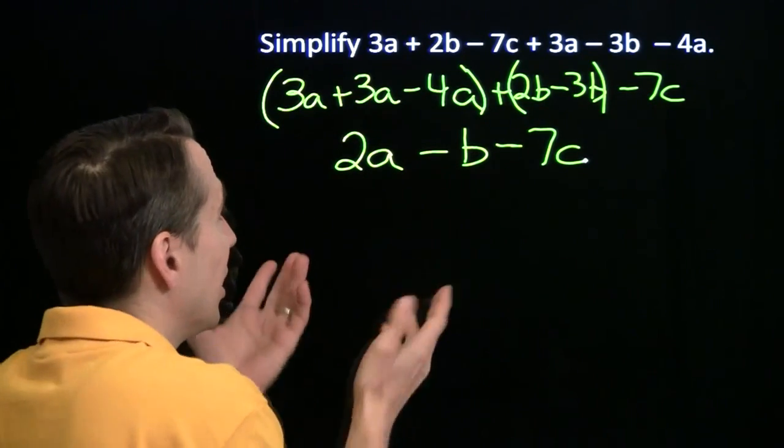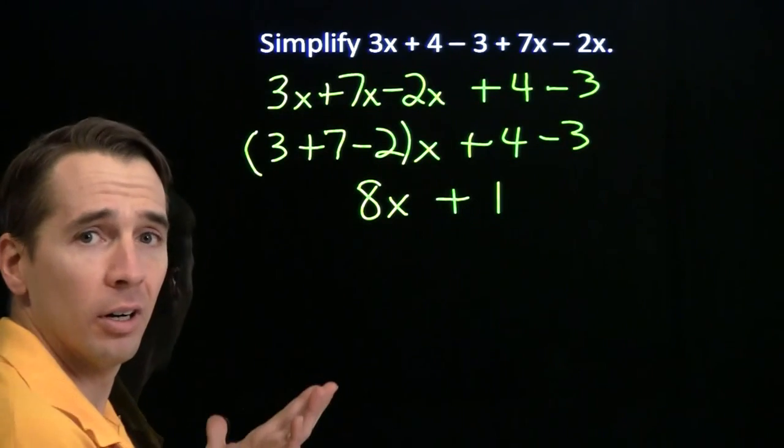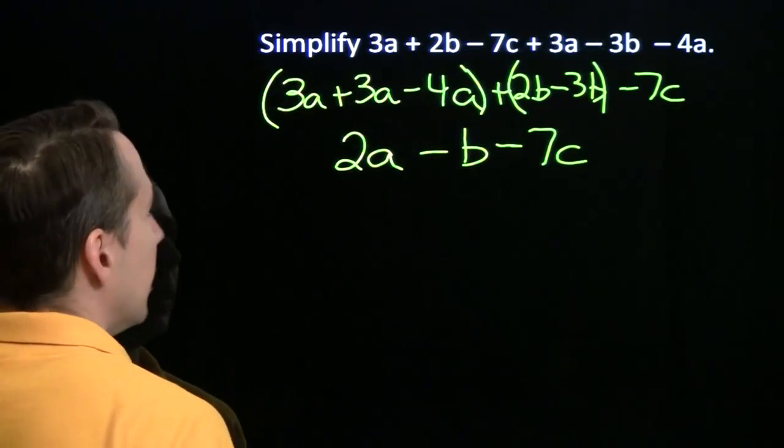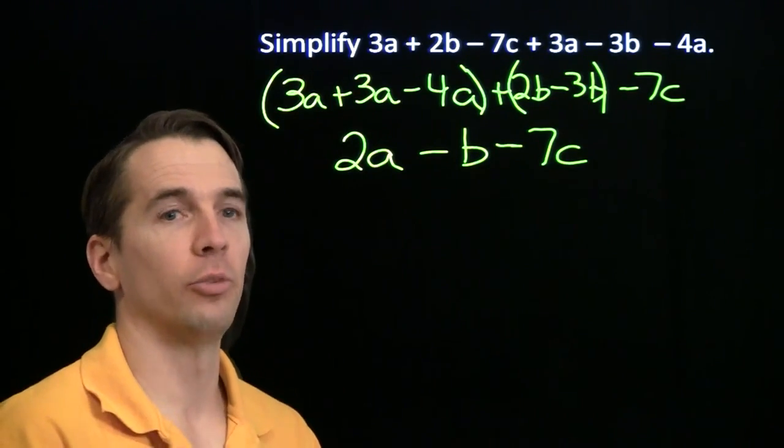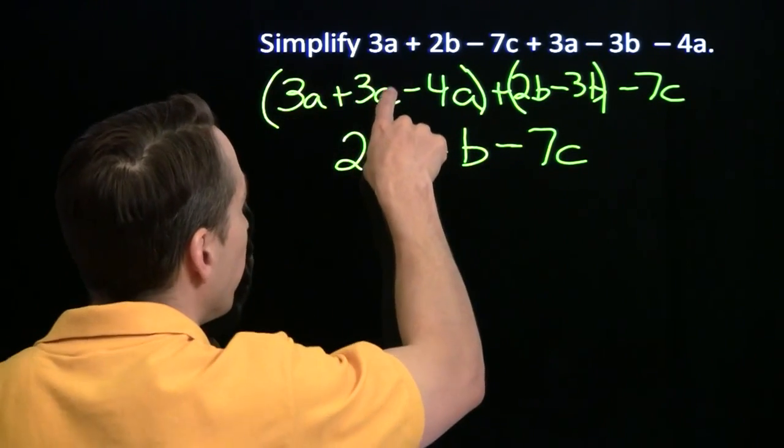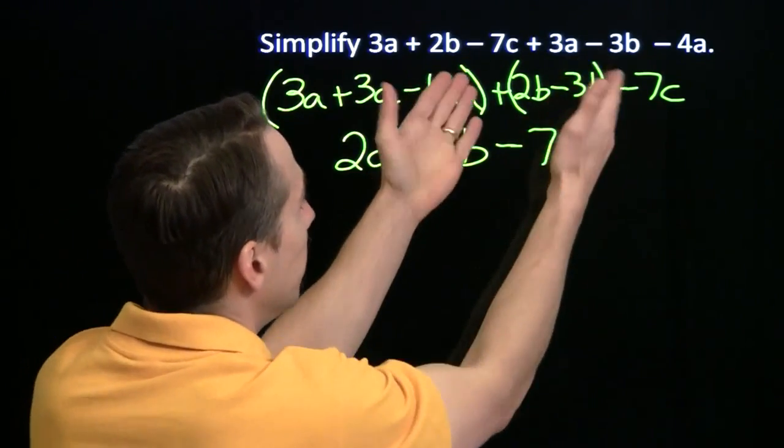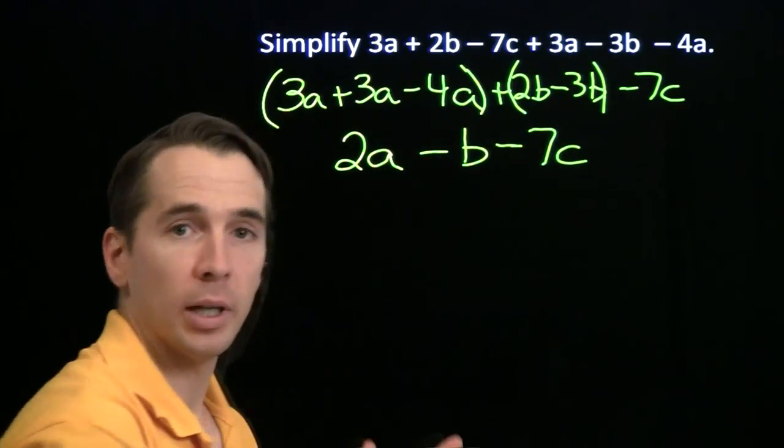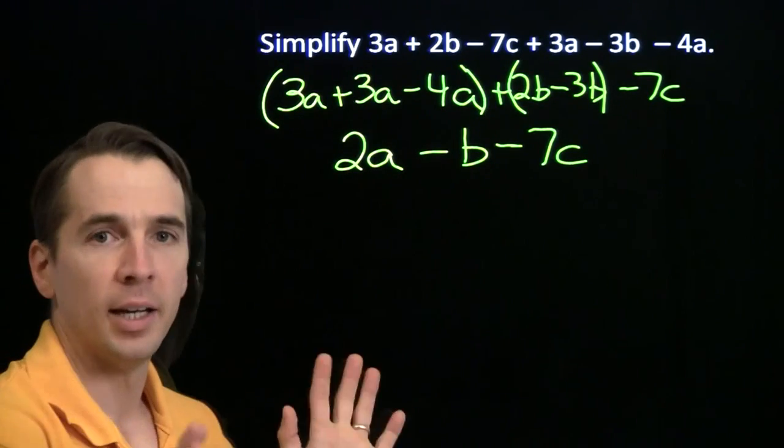And if you're looking at this and thinking, hey, this is nothing new, this is the same thing we did before, then you got it. There's really nothing new here. All we're doing is collecting like terms. It's like terms if the variable expressions are the same. a, a, a—collect all the a's. b, b—we collect the b's. c, we collect the c. Collect the like terms, simplify, and we're done.